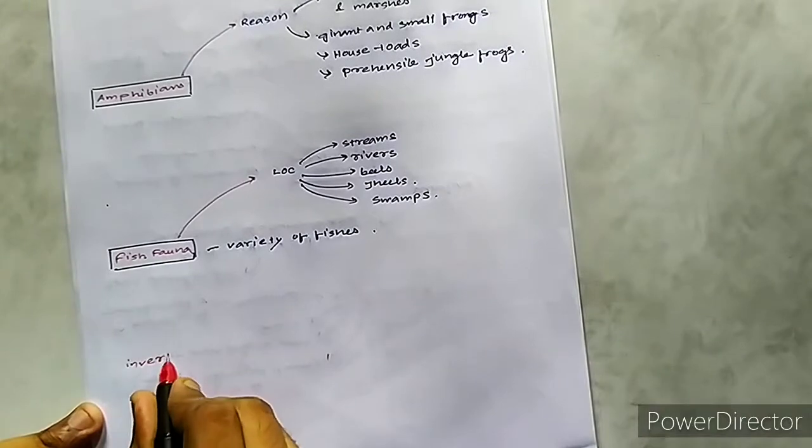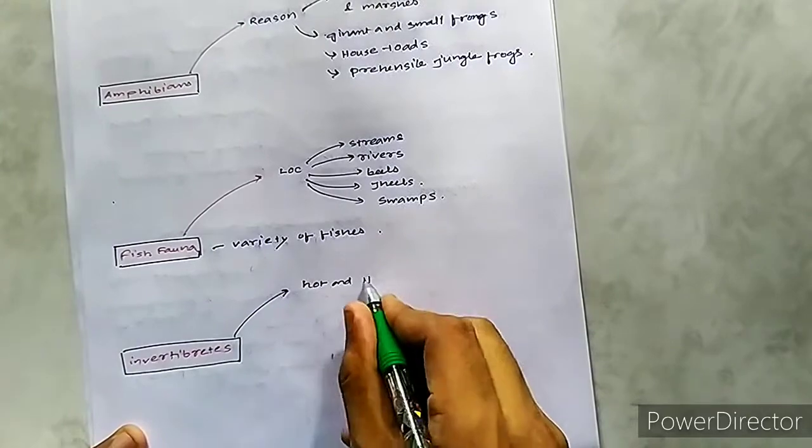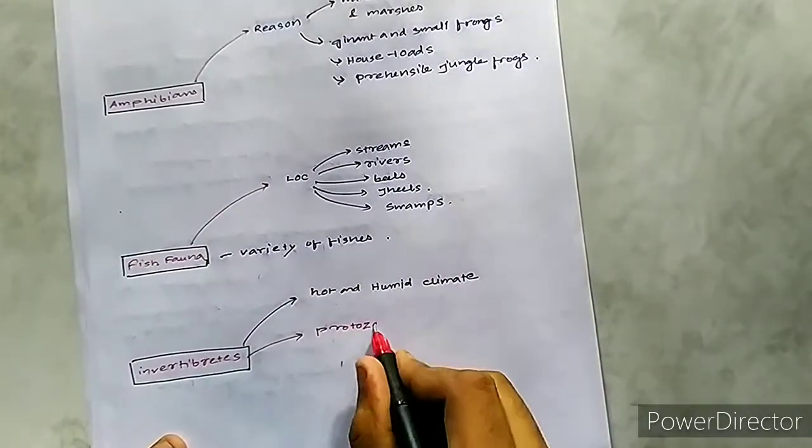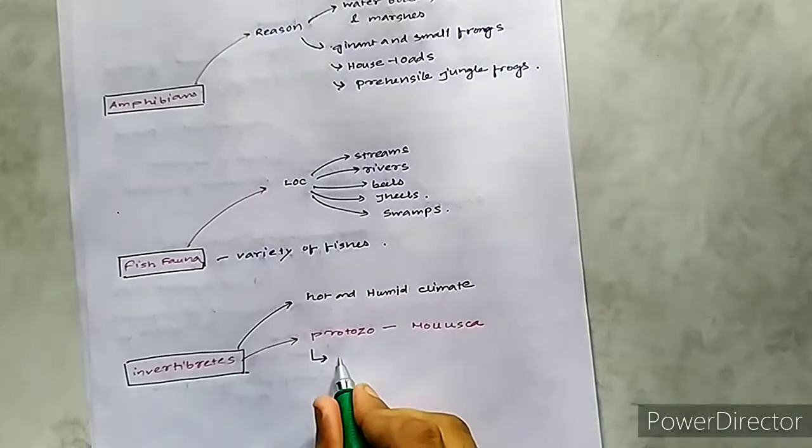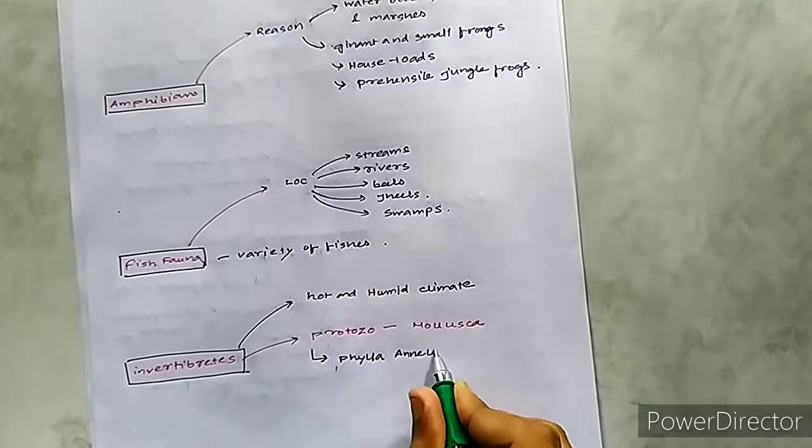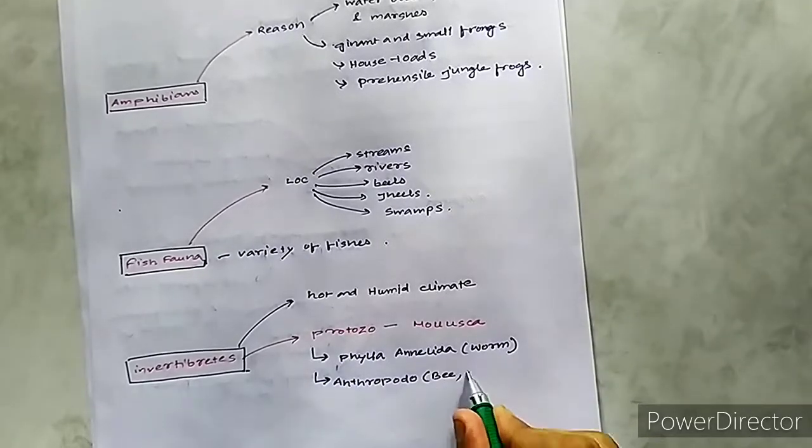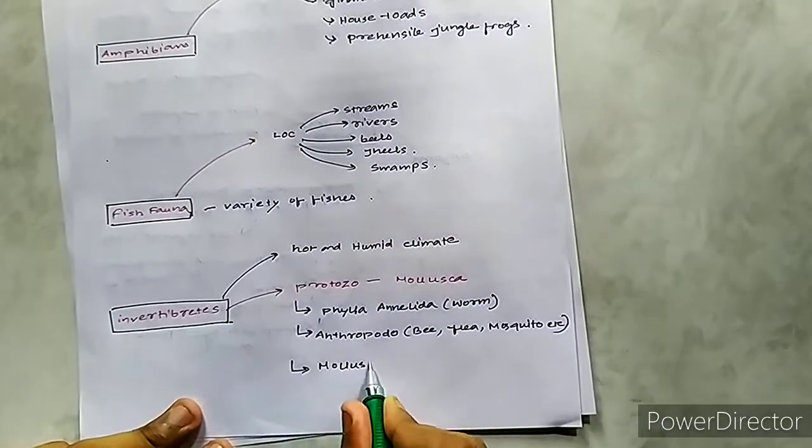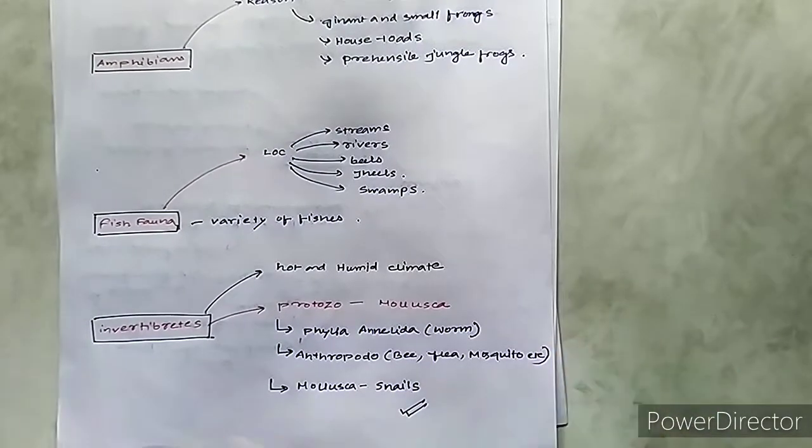The next are the invertebrates. The hot and humid climate prevailing in Assam has provided these invertebrates, ranging from protozoa to mollusca, a great habitat. Out of this, the members of phylum Annelida, that is the earthworm, arthropods like bee, flea, mosquito, moth, cockroach, etc., and the mollusca like snails are supported by the habitat of Assam.